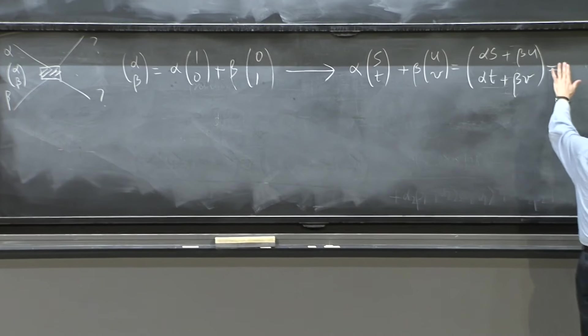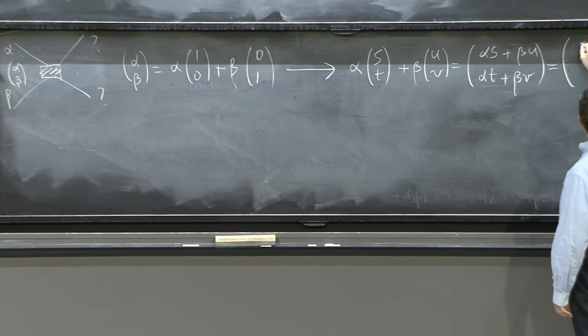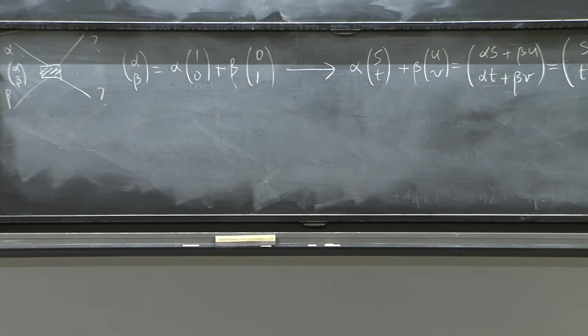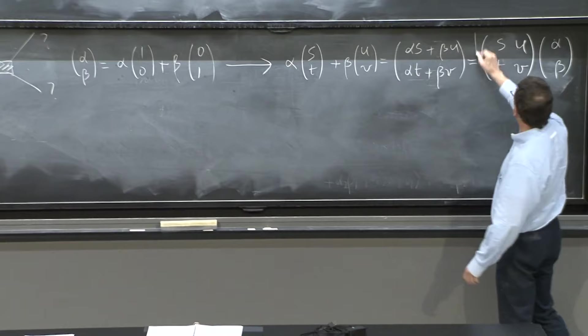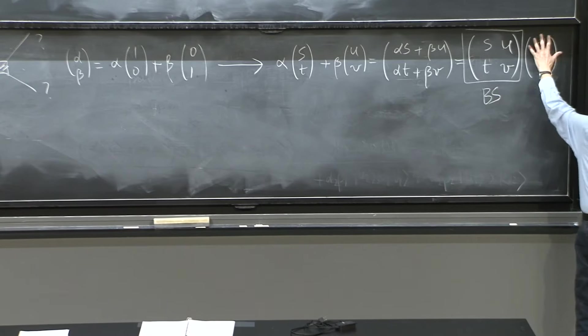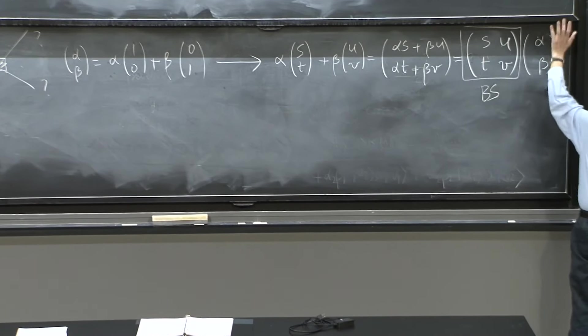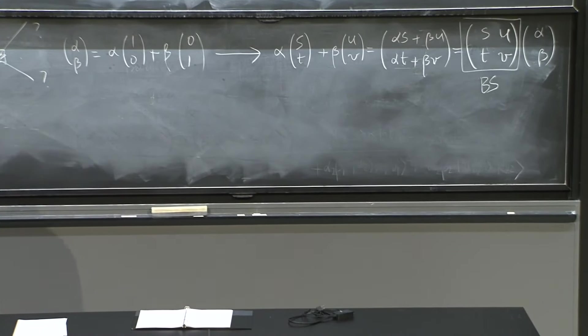So this is (alpha*S + beta*U, alpha*T + beta*V). And I can write this, actually, as (alpha, beta) times the matrix [S,U; T,V]. And you get a very nice thing. That the effect of the beam splitter on any photon state (alpha, beta) is to multiply it by this matrix [S,U; T,V]. So this is the beam splitter. The beam splitter acts on any photon state, and out comes the matrix times the photon state. This is matrix action. Something that is going to be pretty important for us.